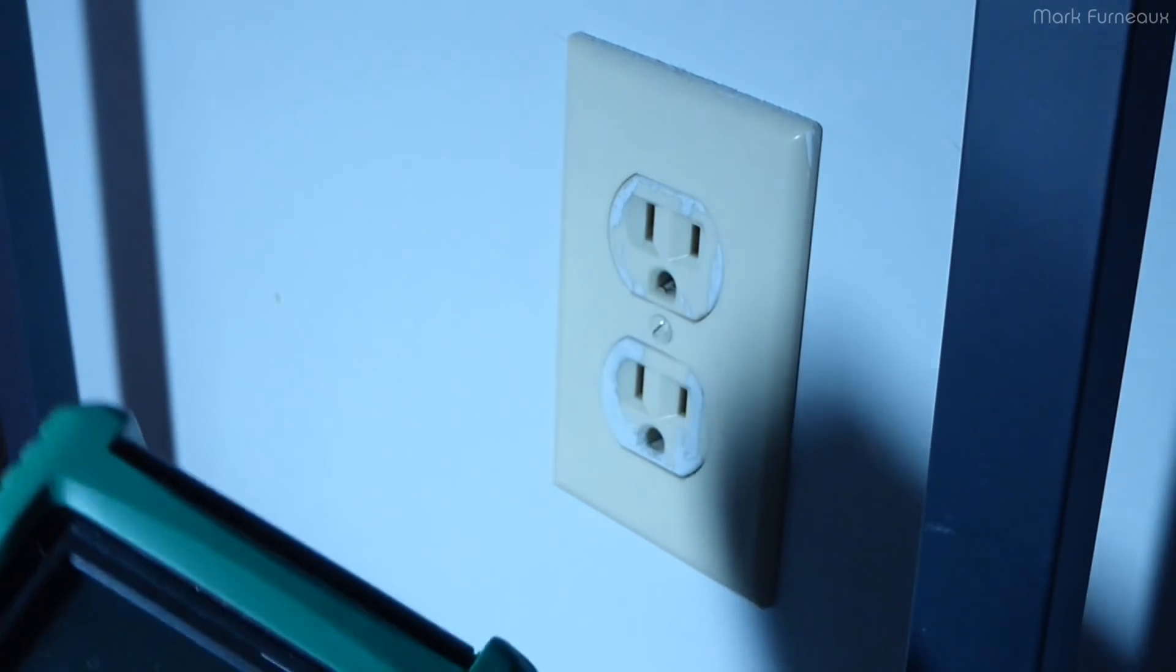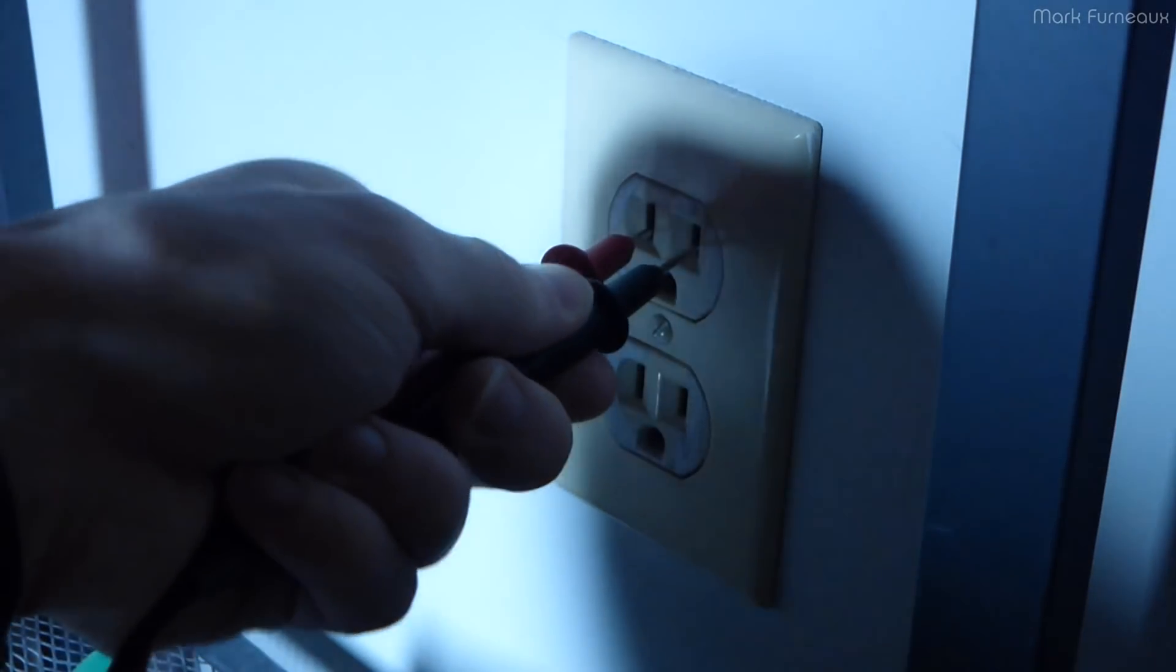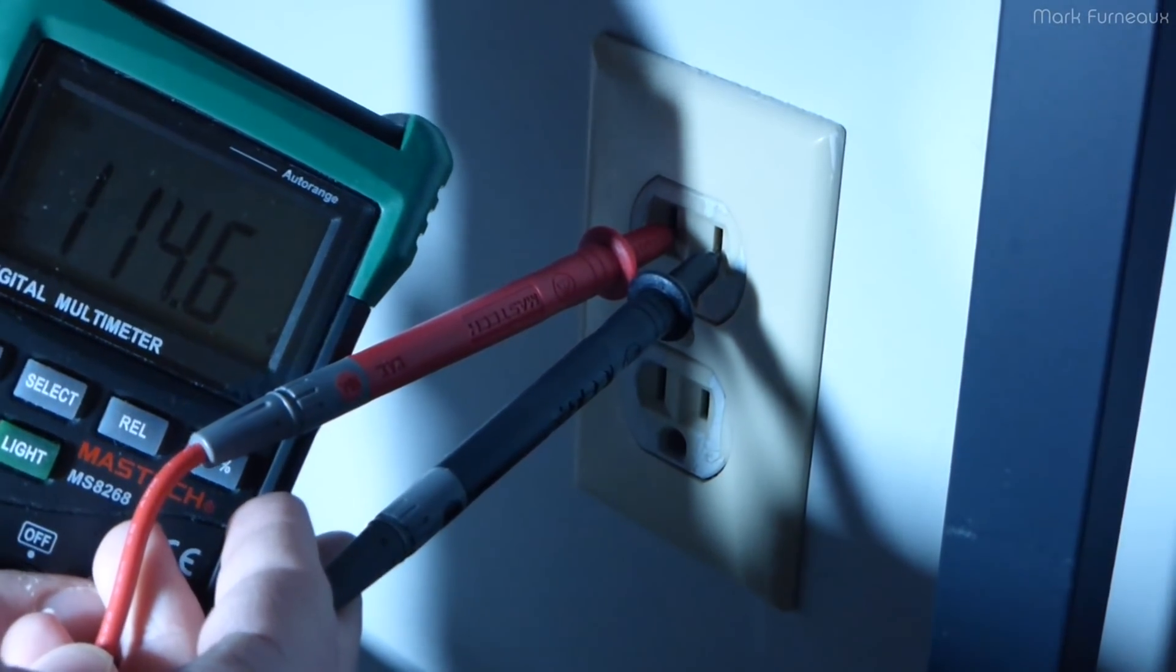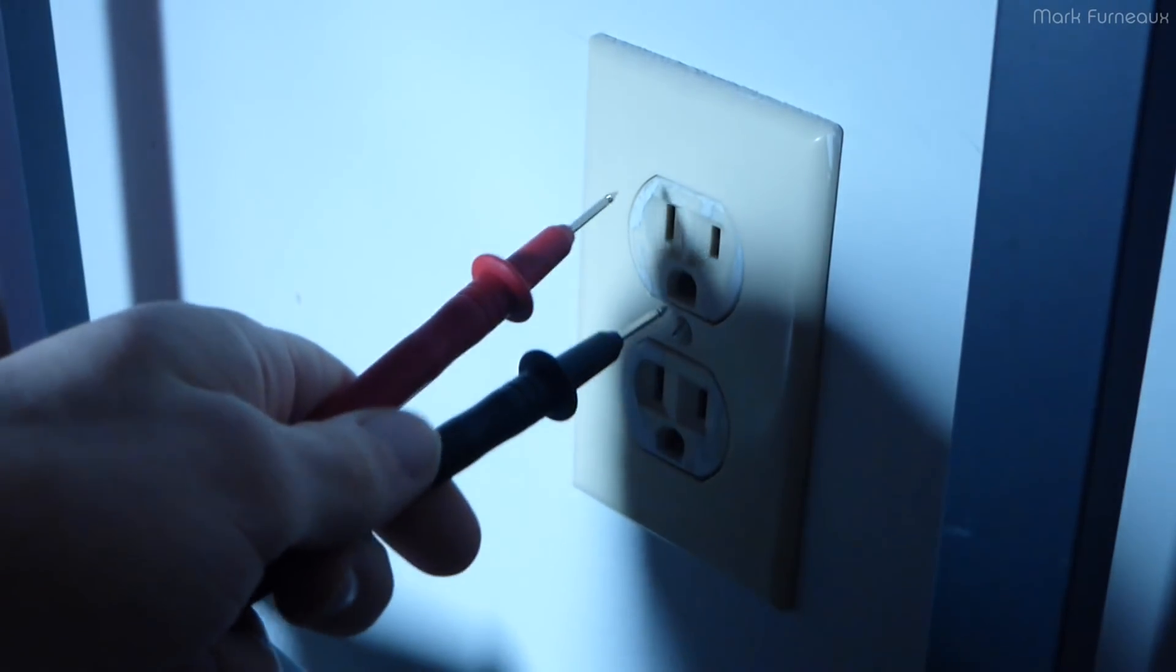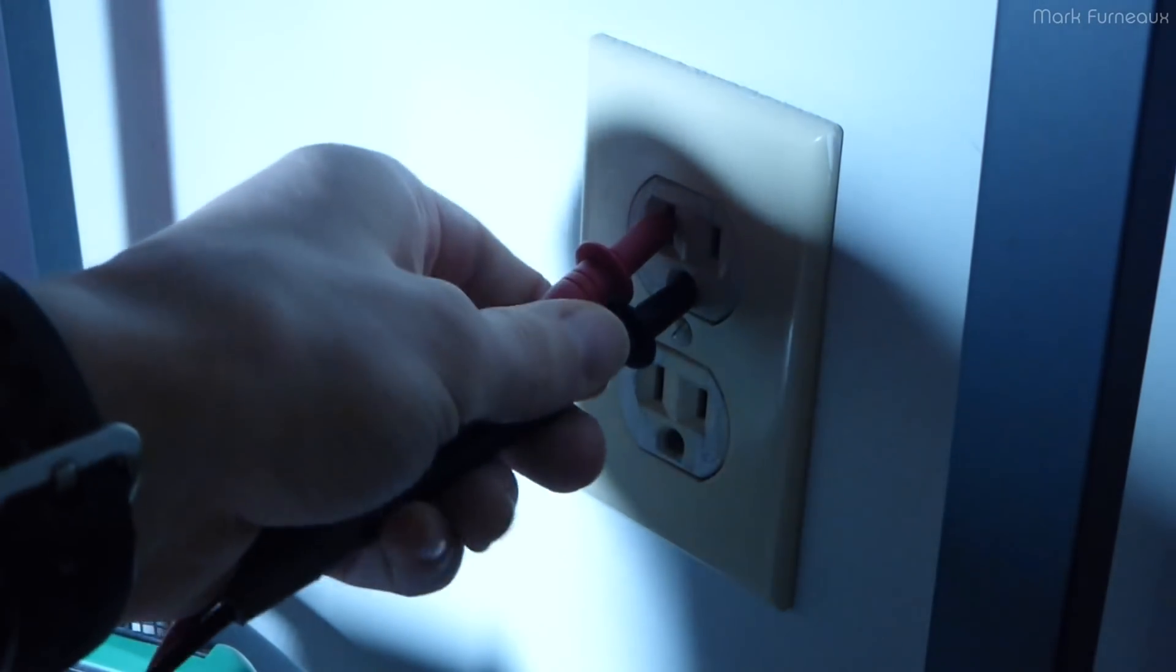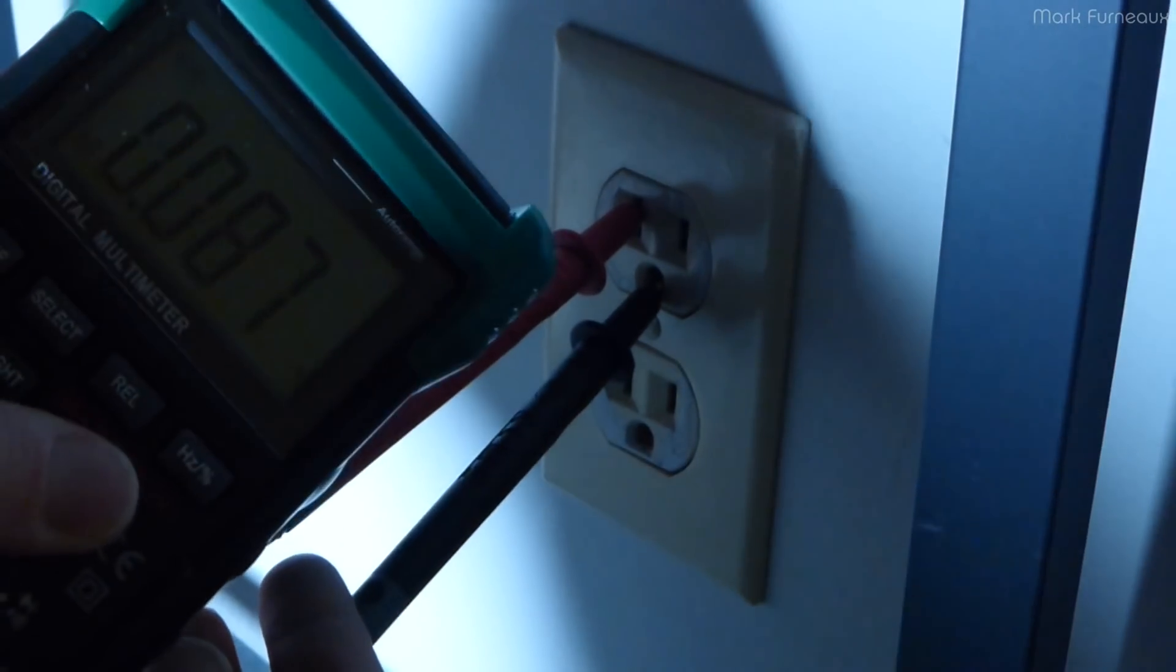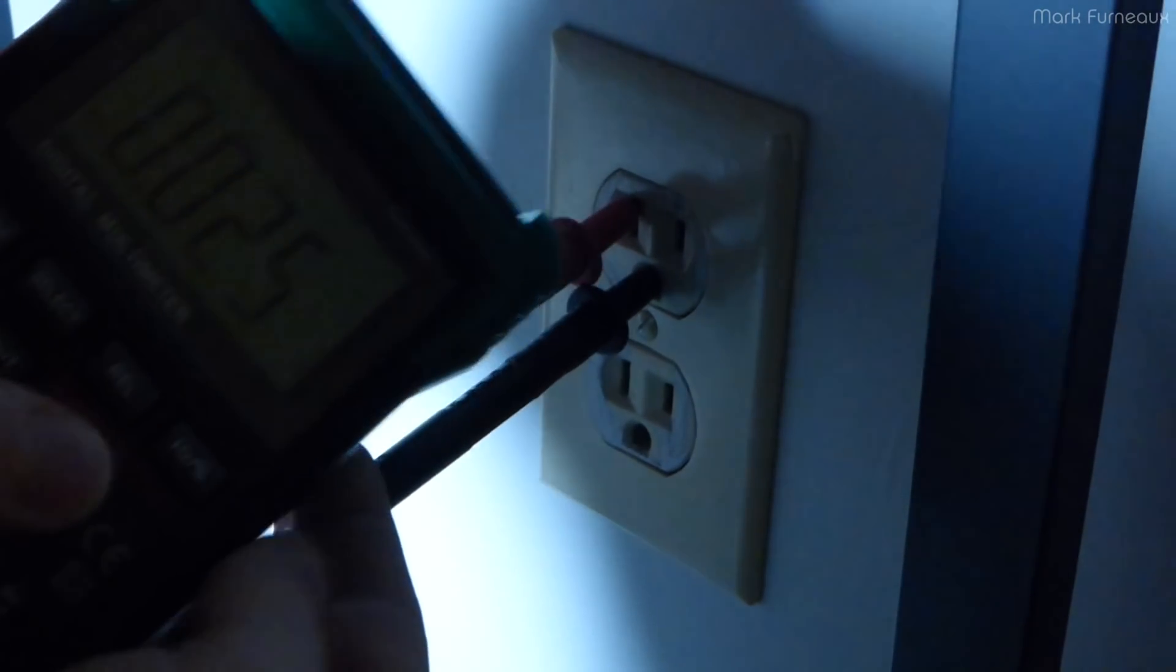So if you take your multimeter and you put it on AC volts, and we connect between the neutral and the live, we should see mains voltage. In my case it's 114.6, which is what we would expect. Now if we check between ground and neutral, we expect to see a voltage that is incredibly low, because of course these two are tied together at some point in the mains wiring.